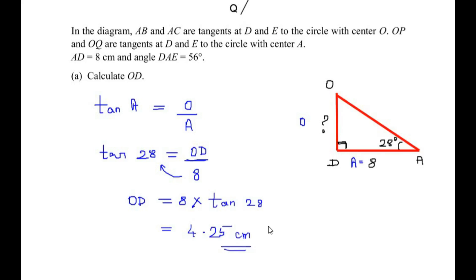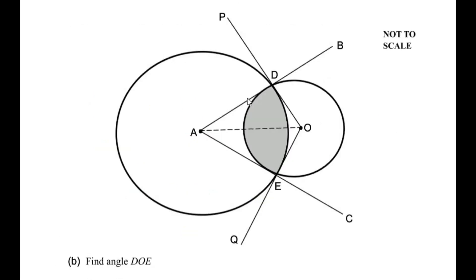This question has two more parts. In part B, we need to find angle DOE. In part A, angle DAE was 56 degrees, and using the radius-tangent theorem, angles ADO and AEO were each 90 degrees. We can consider ODAE as a quadrilateral, and the sum of all angles of a quadrilateral is 360 degrees.